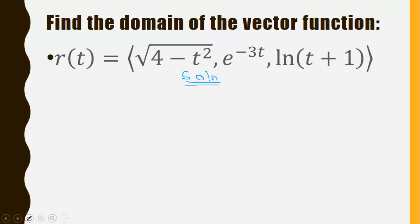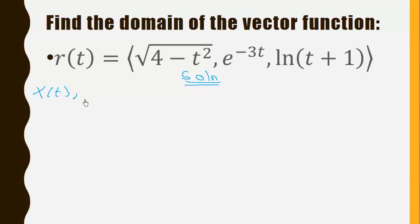To find the domain of a vector function, we look for the interval over which all the functions that compose the vector function R(t) are continuous — in other words, where the functional values of x(t), y(t), and z(t), which combine to form the vector function, all exist.